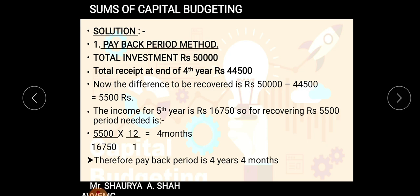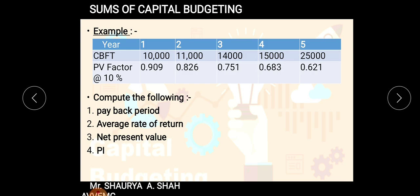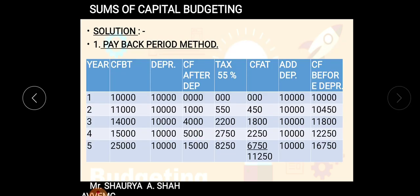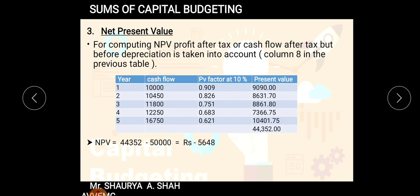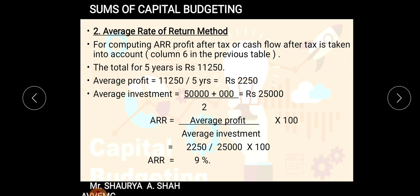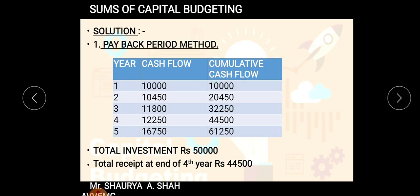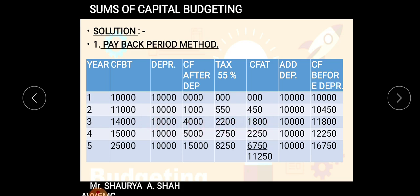That was a revision of what we discussed in the last lecture. Now we start with the remaining three methods. The next method is Average Rate of Return (ARR). We have seen each method in detail, including merits, demerits, and formula. For computing ARR, profit after tax or cash flow after tax is taken into account — specifically the sixth column in the previous table.